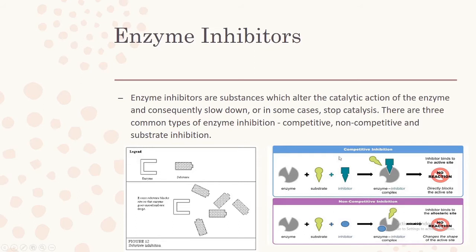In non-competitive inhibition, the inhibitor — also known as an allosteric inhibitor — binds to the allosteric site rather than the active site. This applies pressure onto the active site and changes its shape, meaning the substrate can no longer attach and no enzyme-substrate complex can be formed. In competitive inhibition the active site is directly blocked; in non-competitive inhibition there is a change of shape.